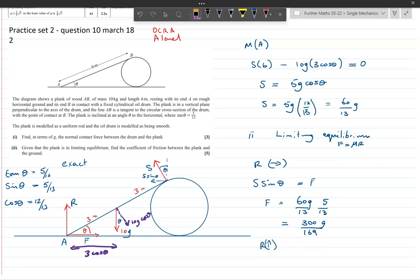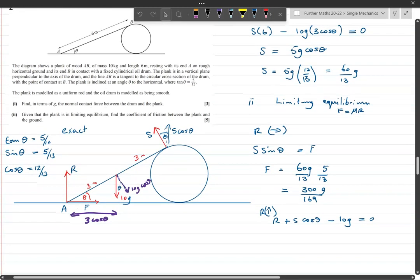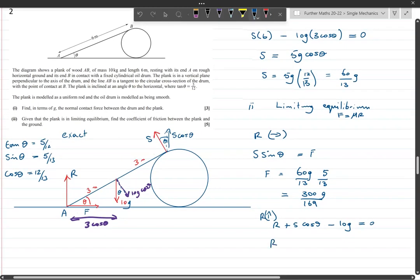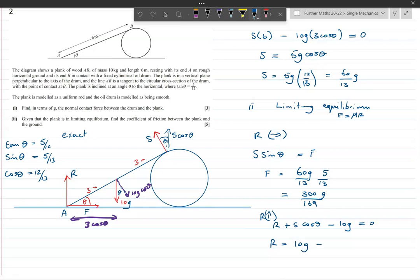Okay, so that's my horizontal equation. Then I can do the same vertically. And now the component that I'm interested in for S is my adjacent component there, which is S cos theta. And they're going to be counteracted by the two vertical components, so we have upwards R plus S cos theta minus 10g equals zero.